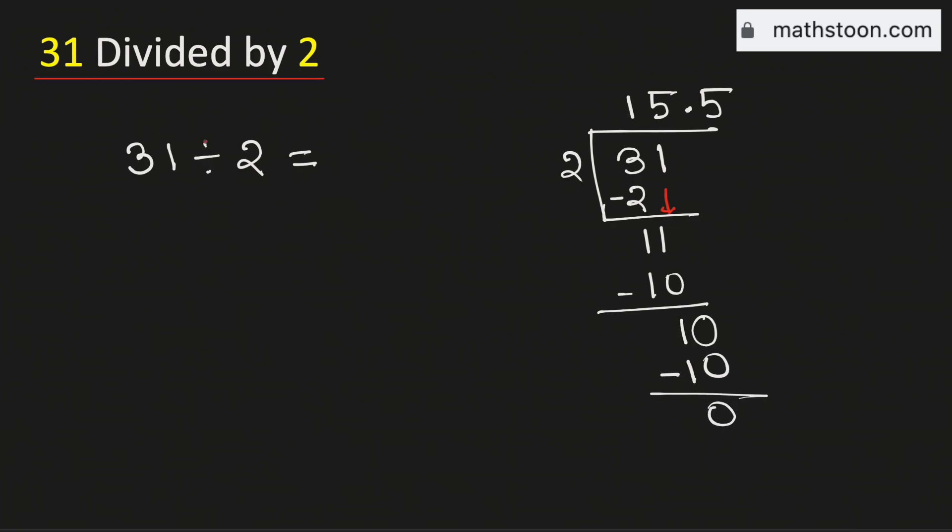Therefore, 31 divided by 2 is equal to 15.5. And this is our final answer.